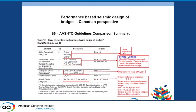When we look at the life safety, operational, and fully operational performance levels, in the Canadian Highway Bridge Design Code we've actually got four levels instead of three. The order is reversed in the code — it starts with immediate performance or immediate service, minimal damage, and then kind of goes to higher damage states.